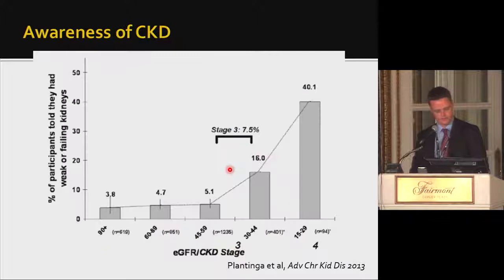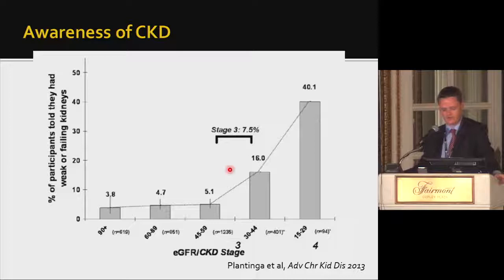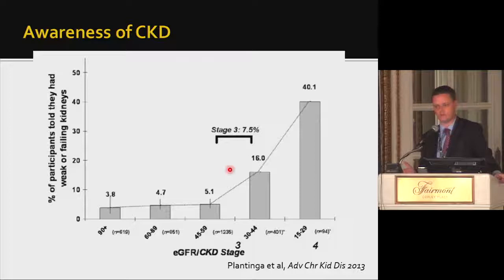Despite this very high prevalence, very few patients are aware they have CKD. Only 7.5% of patients with stage 3 CKD were aware of it in a recent study, and even for stage 4, only about 40% were aware. One can ask: if this is mostly age-related decline and the vast majority will never need renal replacement therapy, is it really important? The lifetime risk of CKD is 60%, but lifetime risk of ESRD is less than 4%, so most will die of cardiovascular disease before progressing.